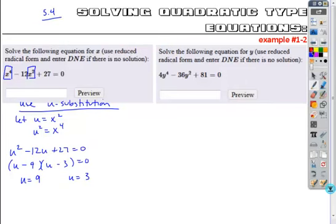And then the key to u-substitution, if you're using it to solve quadratic type equations, is you have to back-substitute your x's from this point. So we know that u is equivalent to x squared. So we're going to back-substitute x squared in for u and then solve the resulting equations.